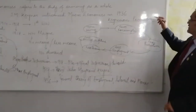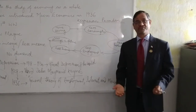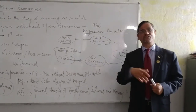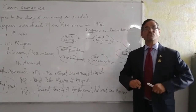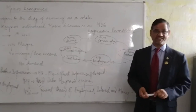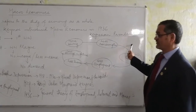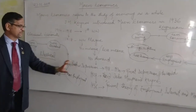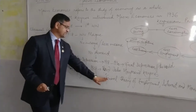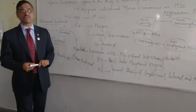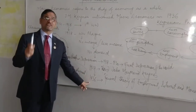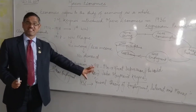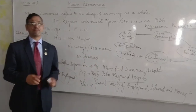Therefore, Keynes came with a macroeconomic concept where he said we need to spend more. The more investment we do, the better it is for the economy, because it is talking about everyone collectively. Until we spend money in the economy, income cannot grow. This is the Keynesian paradox versus the classical economics theme, and this is the history of how macroeconomics came into existence.